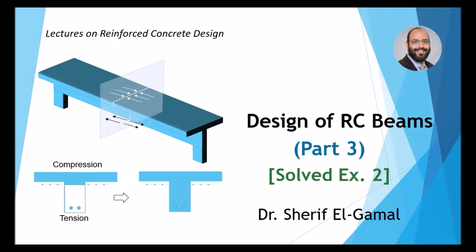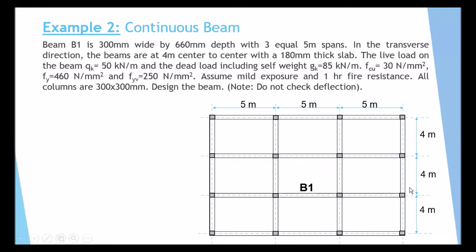In Part 1, we went through introduction and all the checks required for designing Reinforced Concrete Beams. In Part 2, we went through a solid example of a simply supported Reinforced Concrete Beam. In this part, Part 3, we will take a second solid example of a Continuous Beam. In this example, we have a plan consisting of nine slabs supported on beams and columns, and we are required to design B1 — the whole B1 includes three spans of five meters each. So it is a continuous beam of three spans, five meters each.